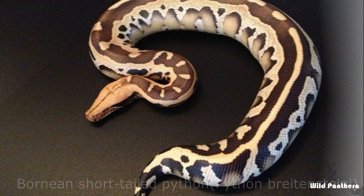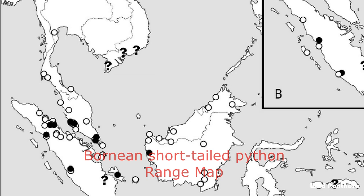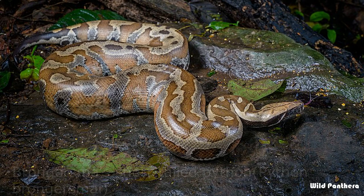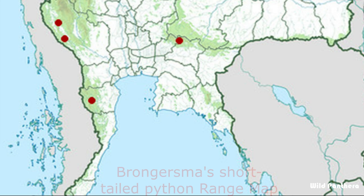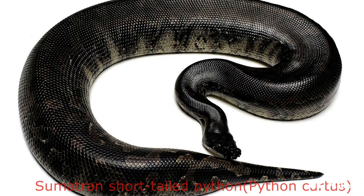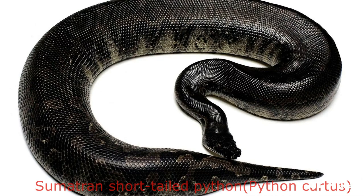Bornean Short-tailed Python: The Bornean Short-tailed Python, also known as the Borneo Blood Python, is a species of non-venomous python endemic to the island of Borneo. Blood Python: Also known as the Blood Python or Red Short-tailed Python, this is a non-venomous python species native to the Malay Peninsula, Sumatra, and adjacent small islands. Sumatran Short-tailed Python: Python curtus, commonly known as the Sumatran Short-tailed Python, is a non-venomous snake native to Sumatra.